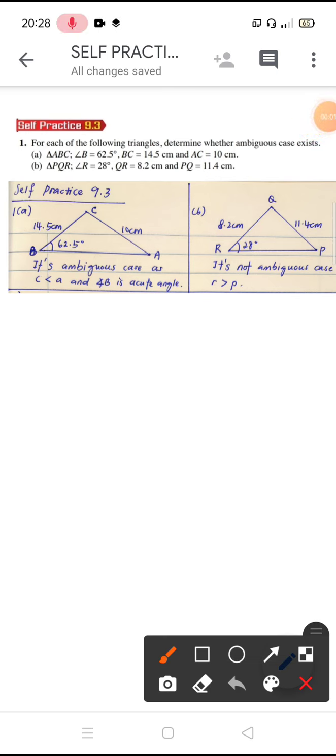Okay, good evening students. This video is about discussion on self-practice 9.3, which is regarding the ambiguous case that will happen on a triangle based on sine rule. So what we mean by ambiguous cases, hopefully you still remember.